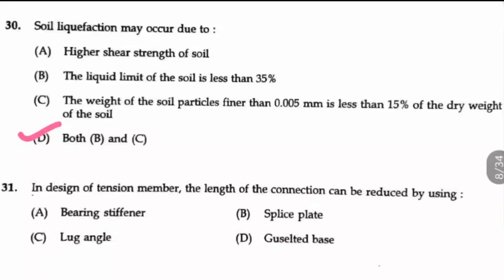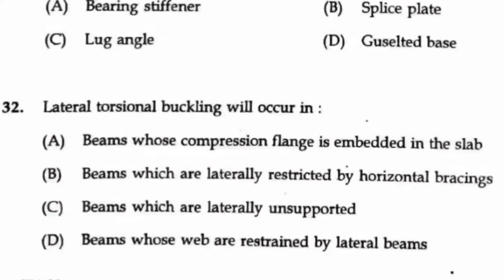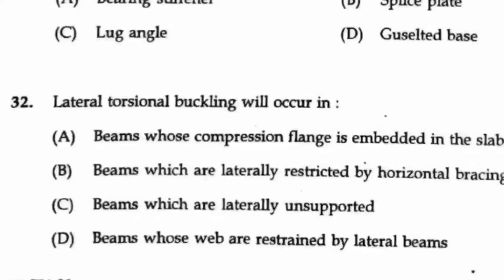Question 31: in design of a tension member, the length of the connection can be reduced by using a lug angle — so this can be used here. 32nd question: lateral torsion buckling will occur in beams which are laterally unsupported — that only will have the lateral torsional buckling. So option C is the right answer.